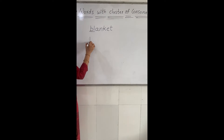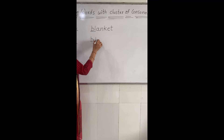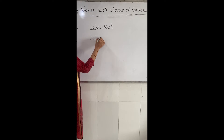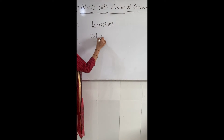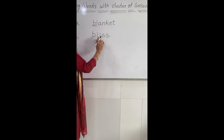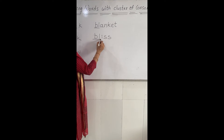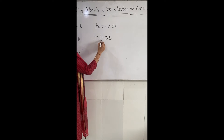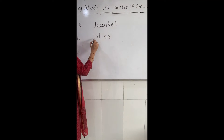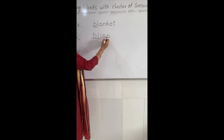The next word is 'bliss'. B, L, I, S, S — bliss. So B, L, I, double S — bliss.